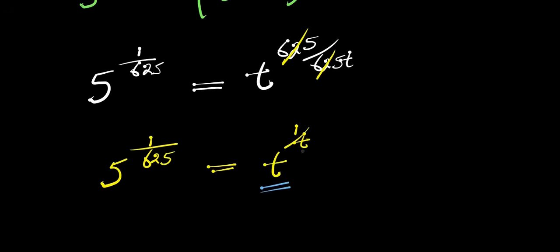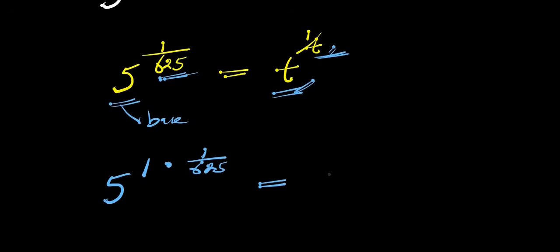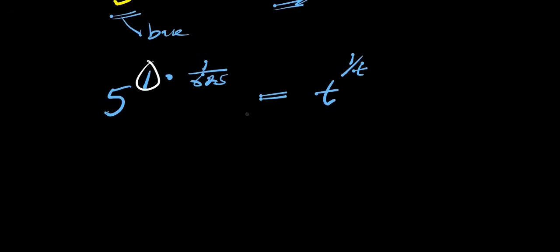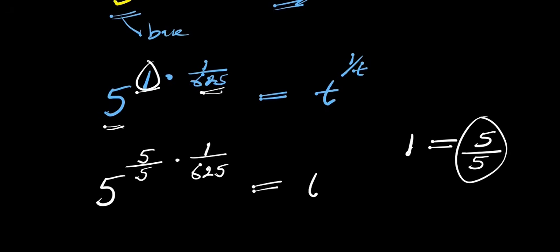Now, if you observe, there is t here and t here, and there is 5 here and 65 here. I want the base on both sides to match, so I am going to make use of equivalent fractions. I can write 5 to the power of 1 times 1 over 65, equals t to the power of 1 over t. Instead of writing this 1, I can replace it with 5 over 5, which is the same thing as 1. So I have 5 to the power of 5 over 5, times 1 over 65, and this equals t to the power of 1 over t.